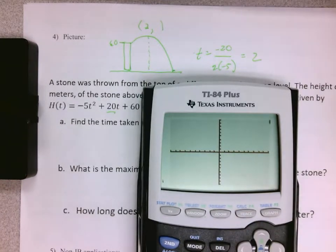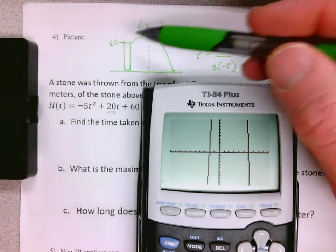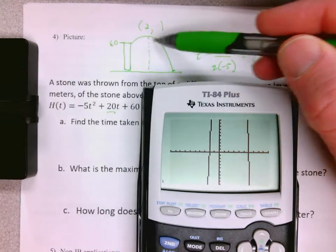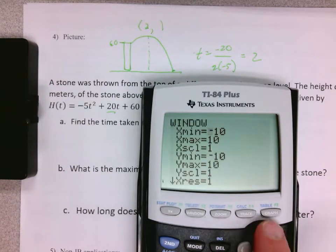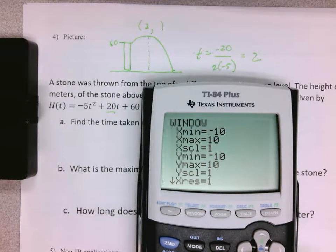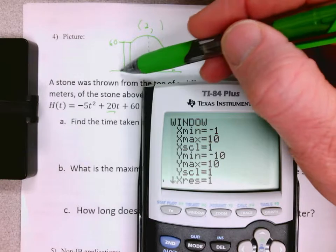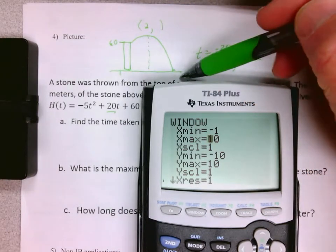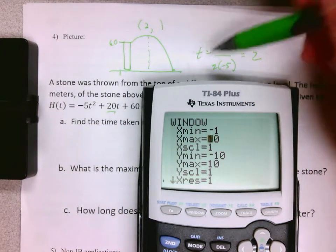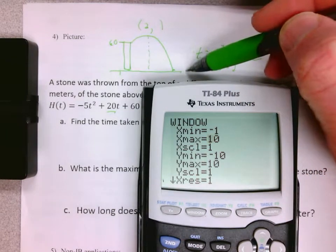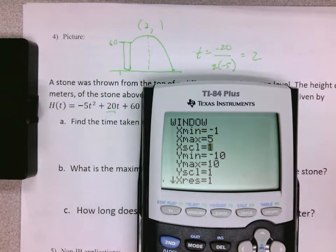Now your graph, when you push graph, probably looks like this and you're thinking this is not helpful. This is why I have you make the picture every time. I know that my y starts at 60 and goes up from there. If you push window, you can see what your viewing window is. I want my x-axis to go from a little bit past the y-axis over to the furthest I need to go, probably to 5 so I can see.